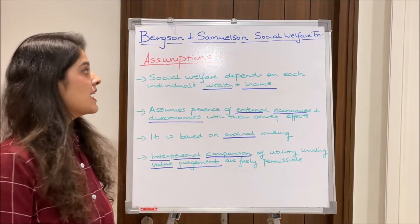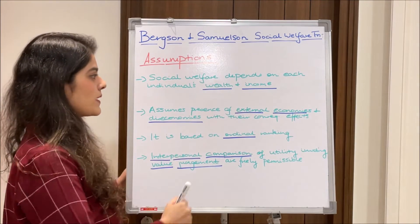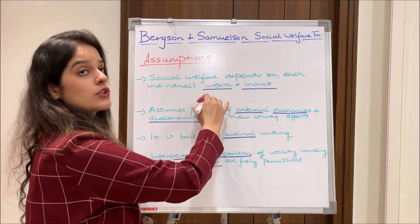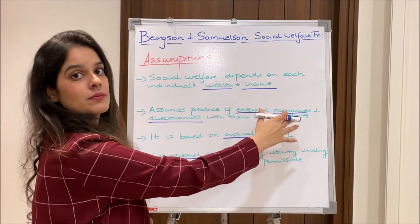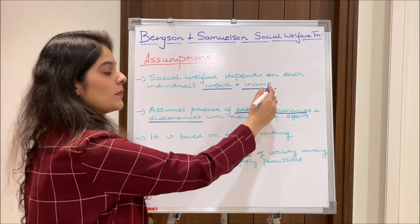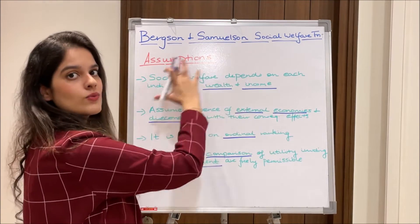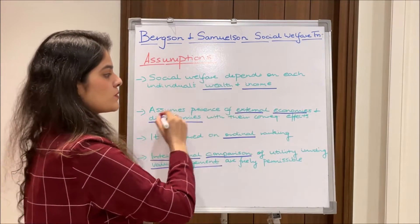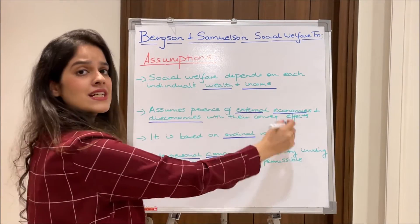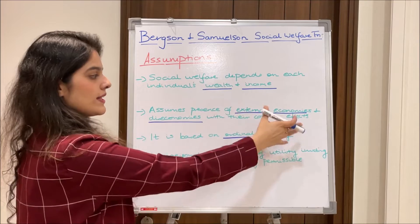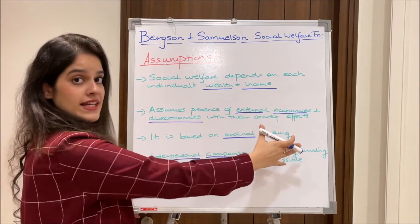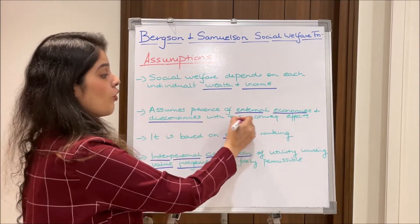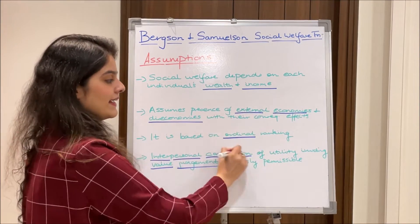Moving ahead to some assumptions to keep in mind: first, social welfare depends on each individual's wealth and income — social welfare totally depends on that. Second, it assumes the presence of external economies and diseconomies with their consequent effects. Third, as mentioned before, it is based on ordinal ranking.